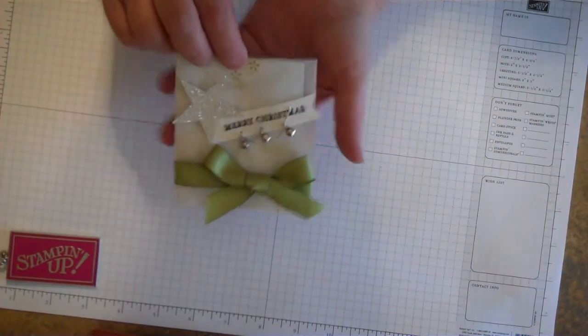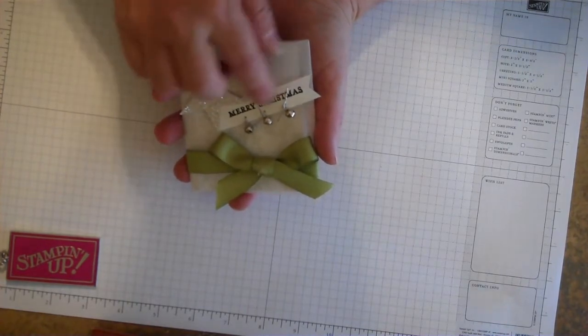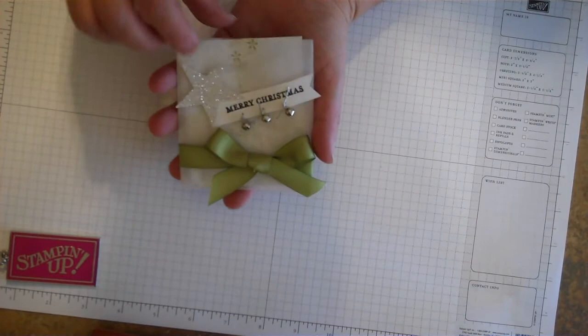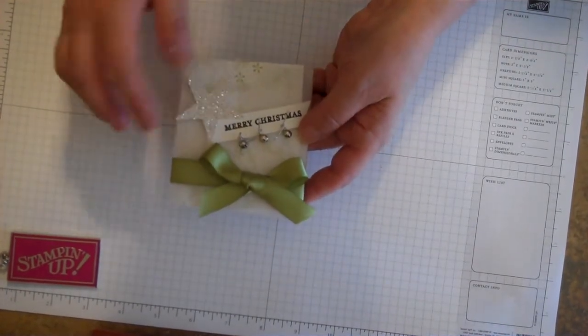When you have Thanksgiving or Christmas, you could put little name tags inside of here or on the outside and have a special little message on the inside. So it's a versatile little vellum pocket and lots of people are afraid to work with vellum.